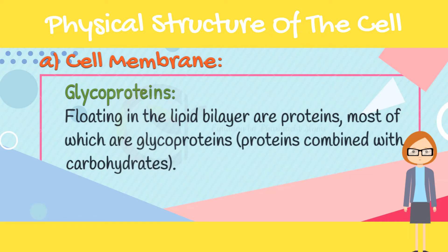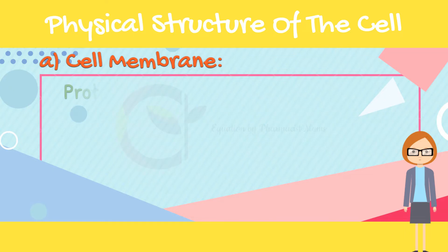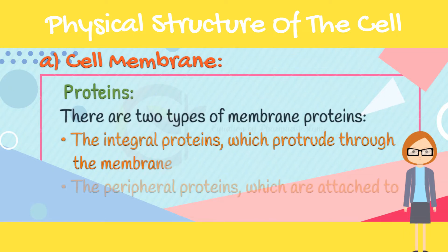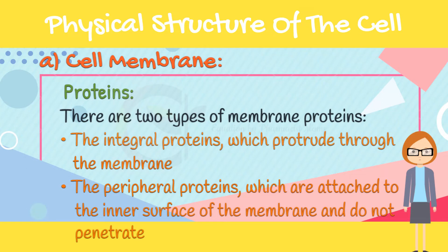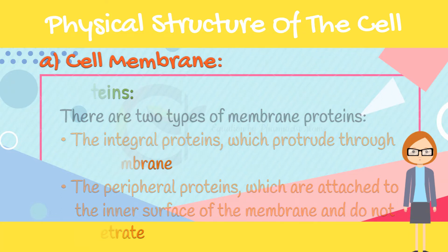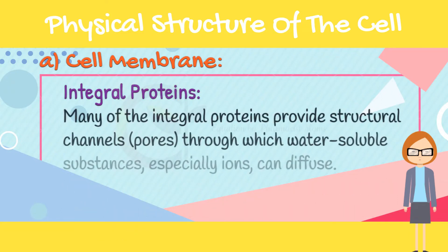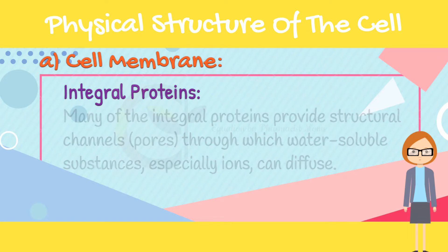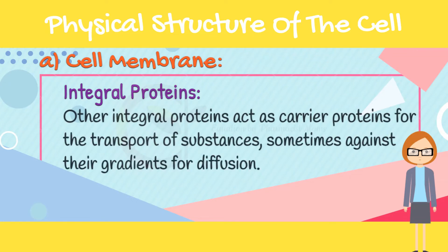Floating in the lipid bilayer are proteins, most of which are glycoproteins — proteins combined with carbohydrates. There are two types of membrane proteins: the integral proteins, which protrude through the membrane, and the peripheral proteins, which are attached to the inner surface of the membrane and do not penetrate. Many of the integral proteins provide structural channels or pores through which water-soluble substances, especially ions, can diffuse. Other integral proteins act as carrier proteins for the transport of substances, sometimes against their concentration gradients.